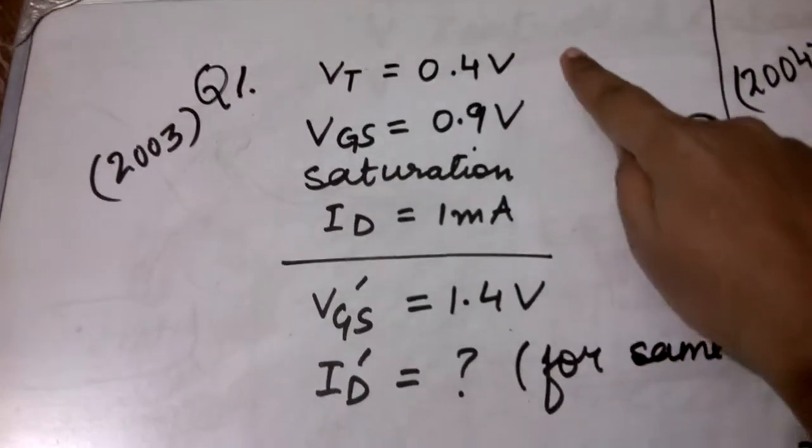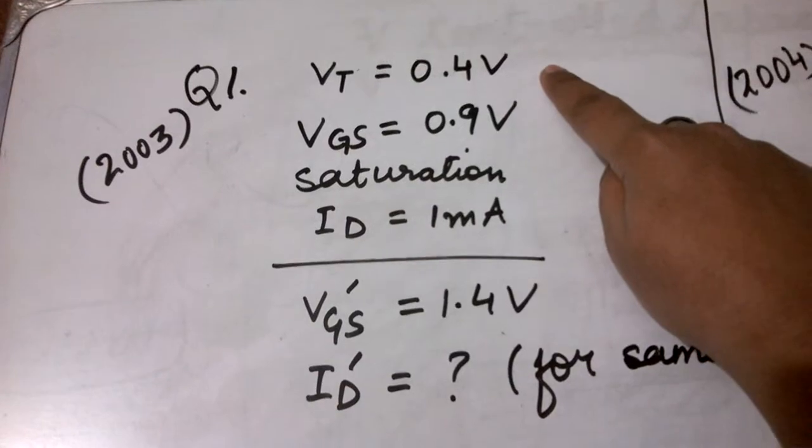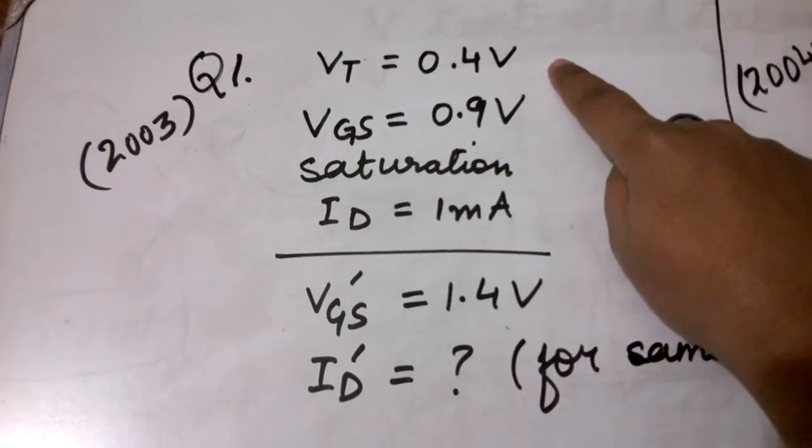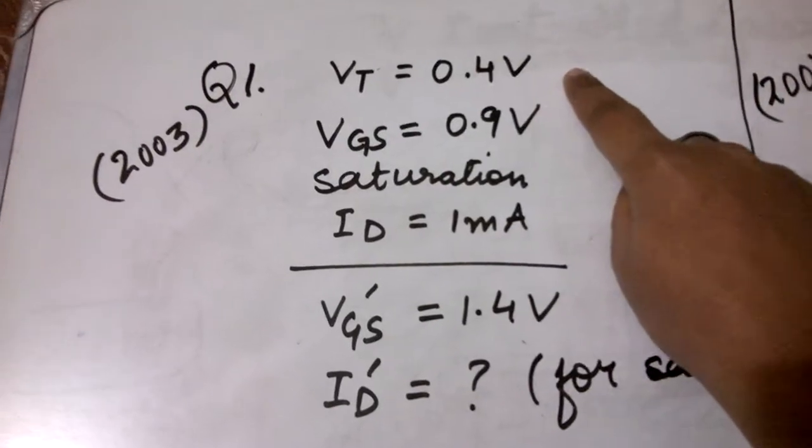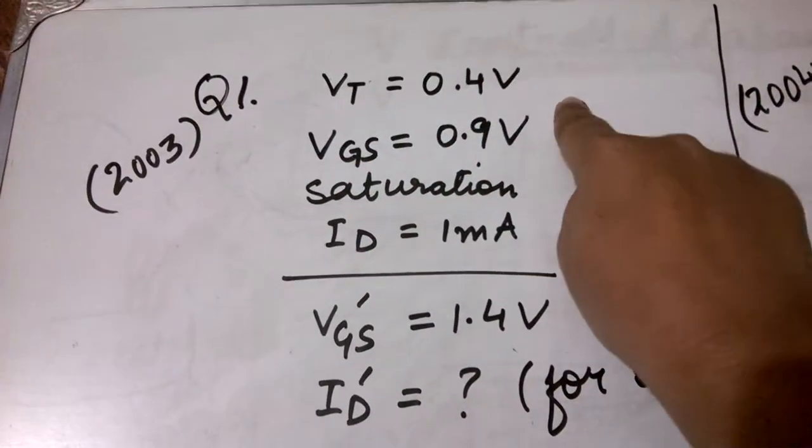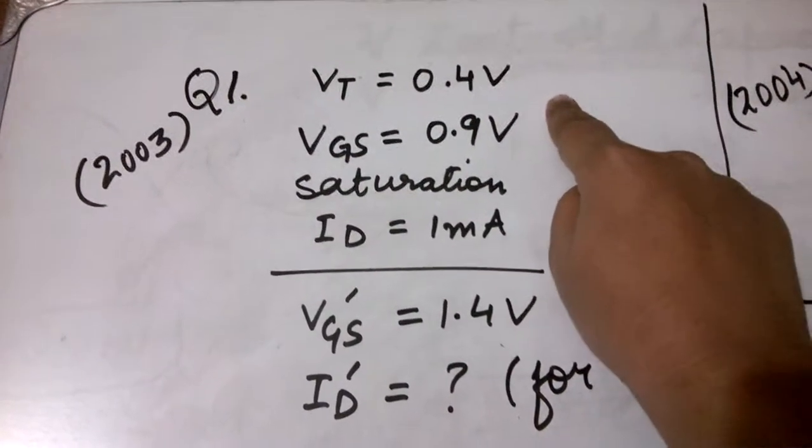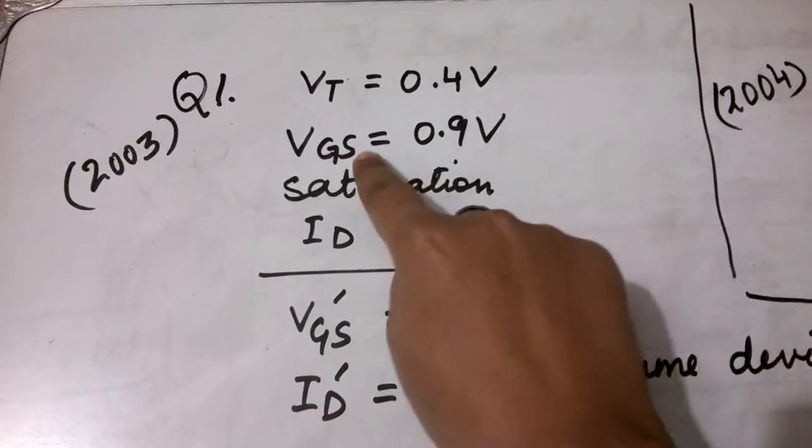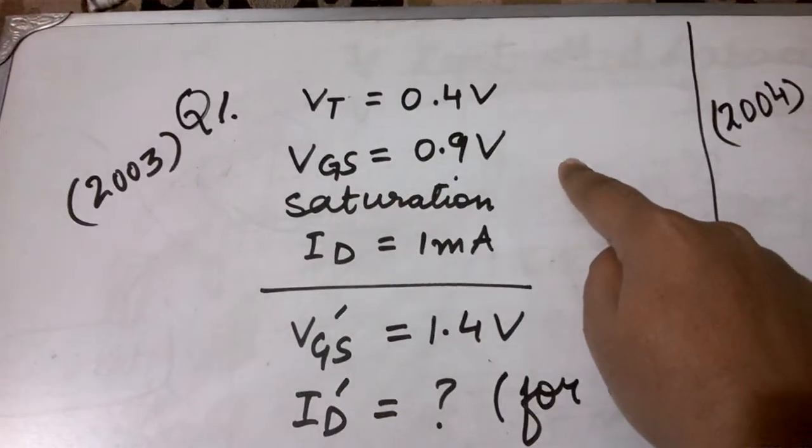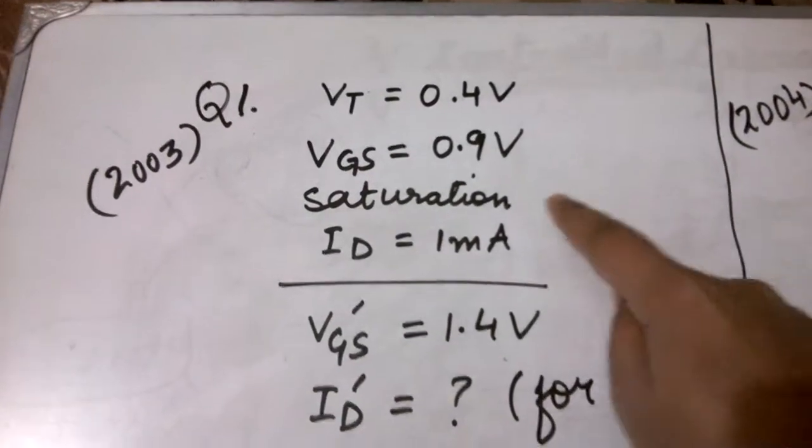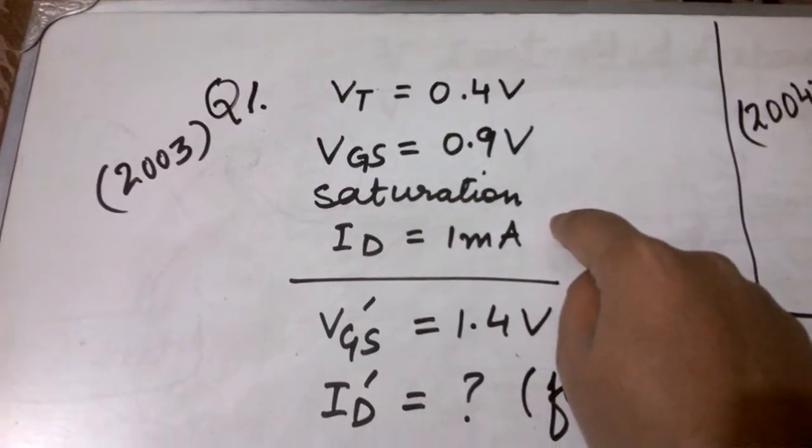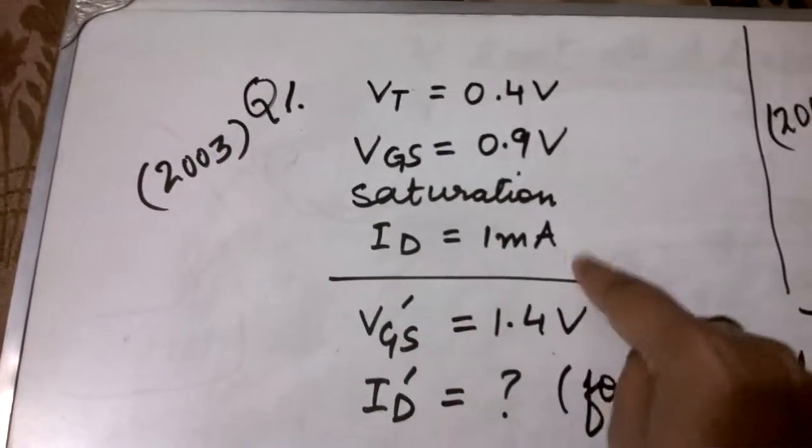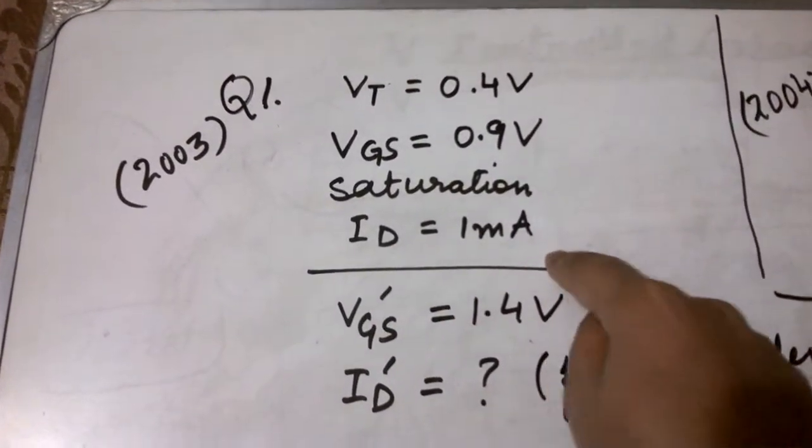In this question, certain information such as the threshold voltage of the device was given. A MOSFET was given for which Vt is 0.4 volts. As we can see, Vt is positive so this is basically an NMOS device. Vgs, the gate to source voltage, was given as 0.9 volts. It was given that the device is in saturation and Id was given as 1 milliampere.